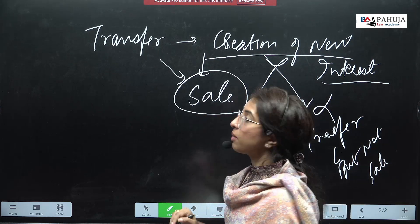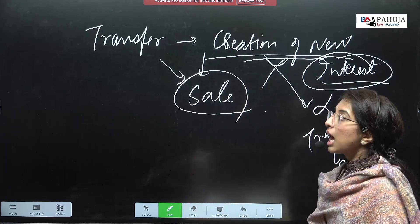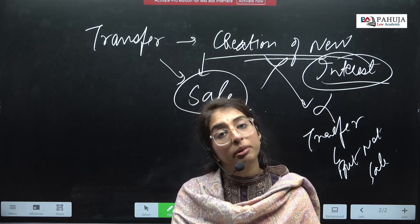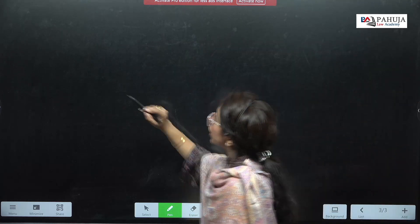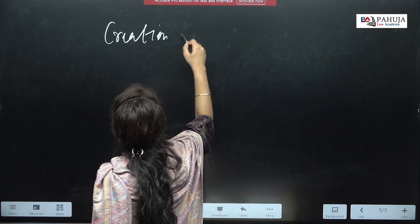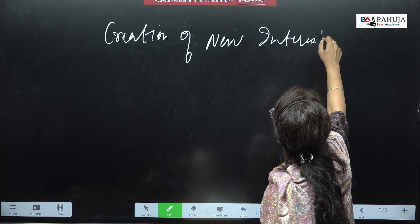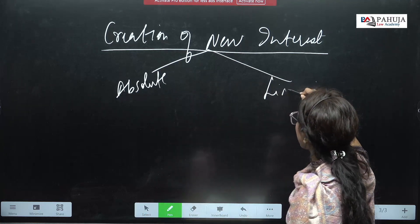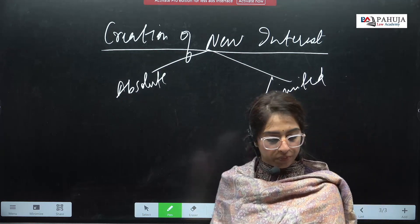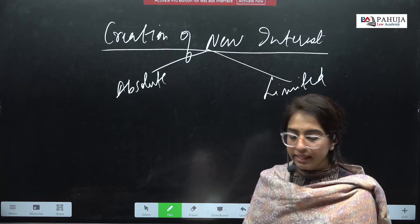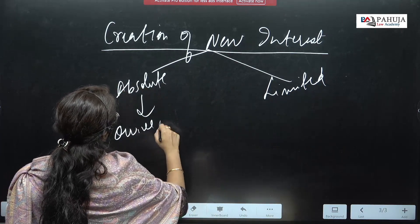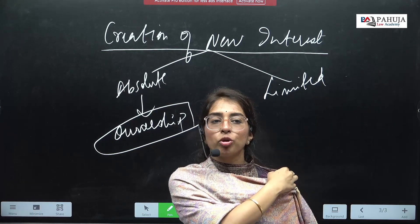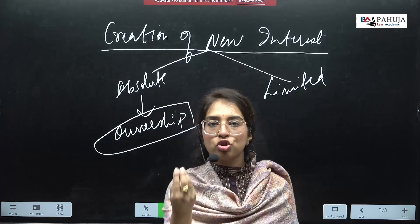The next question is: can the creation of new interest be absolute or can it also be limited? The answer is this new interest can be both — creation of new interest can be absolute and can also be limited. What does this mean? If absolute interest is created, then ownership of that thing will come to me.